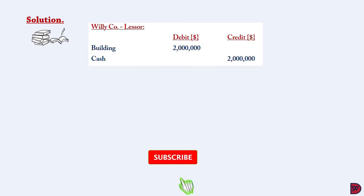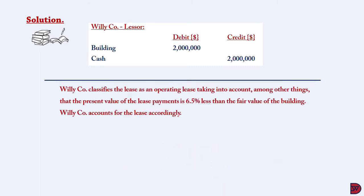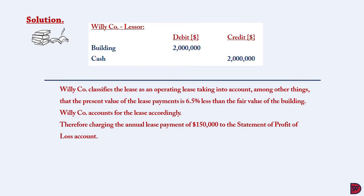Now for WilliKool the lessor: he will recognize the building and credit his cash at $2 million. Subsequently, WilliKool will classify the lease as an operating lease, taking into account that the lease payments represent 6.5% of the fair value of the building. Looking at the criteria for recognizing a finance lease, the total lease payments have to be substantially equal to the fair value — this lease has failed that test. WilliKool will therefore charge the annual lease payment of $150,000 to the statement of profit and loss.